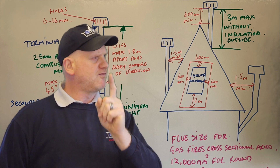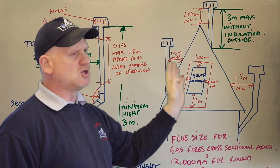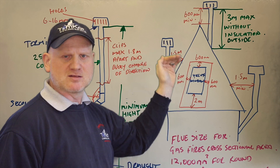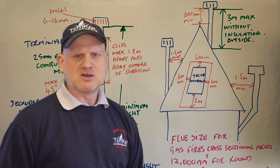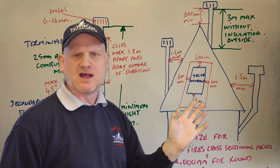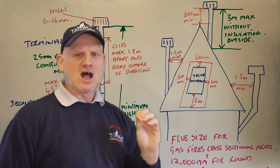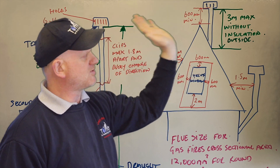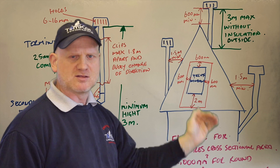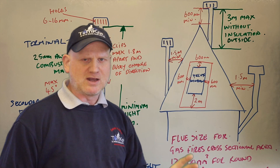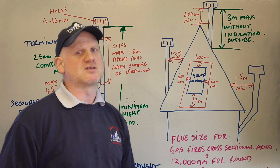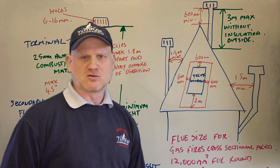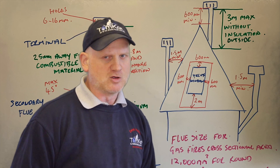For Velux windows — and these measurements also apply to room sealed appliances — at the bottom of the window you need two meters clear of any flue. The shaded exclusion zone around the window is: 600mm to each side, 600mm at the top, and two meters down at the bottom. You're not allowed to put the flue system within that rectangle around the window.